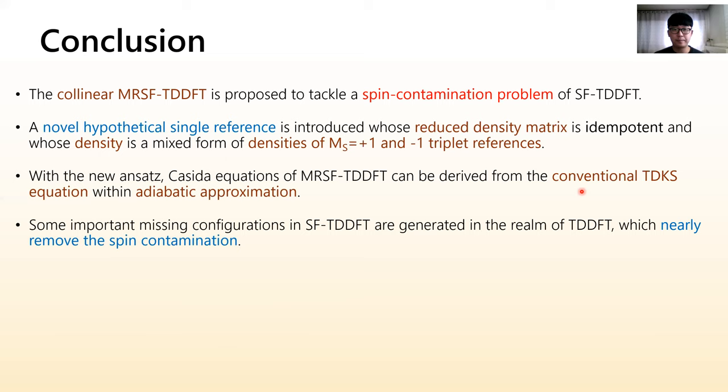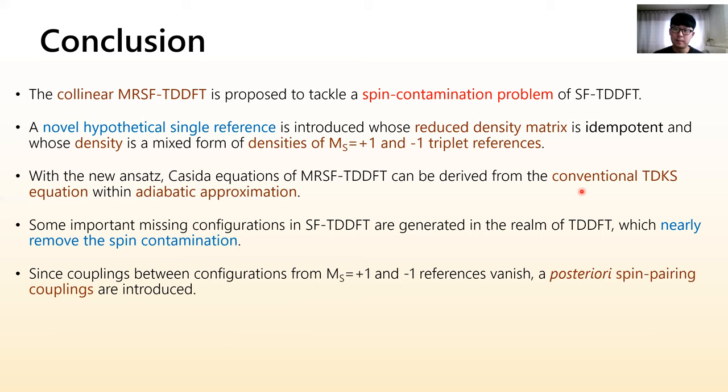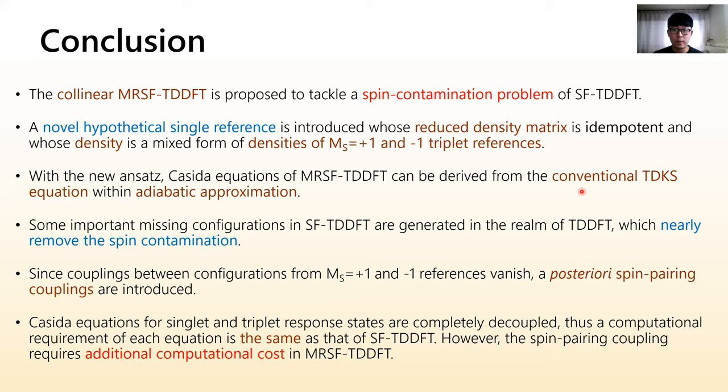Due to a vanishment of coupling between configurations from two different references, a posteriori spin-pairing coupling are introduced in this version of method. Casida equations for singlet and triplet response states are completely decoupled. So a computational cost for each equation is the same as that of spin-flip TDDFT. But the additional spin-pairing coupling requires additional computational cost in mixed reference spin-flip TDDFT.